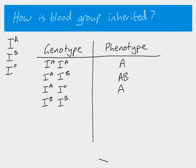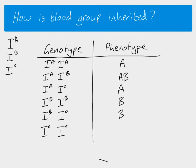If we had the genotype I^B I^B, the phenotype would be B. And with I^B I^O — a capital B and a small O — B is dominant over O, so the blood group would be B. The only time you would get blood group O is if you had a homozygous individual with two O alleles. And that's all you need to know about multiple alleles.